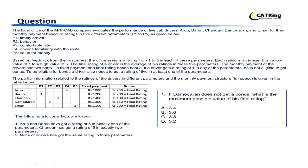The question says the local office of the APP cab company evaluates the performance of 5 cab drivers: Arun, Barun, Chandan, Damodaran, and Imam — let's call these A, B, C, D, E — for their monthly payment based on ratings in 5 different parameters P1 to P5. P1 is timely arrival, P2 is behavior, followed by comfortable ride, driver's familiarity with the route, and value for money. These are the 5 parameters on which they have been rated.